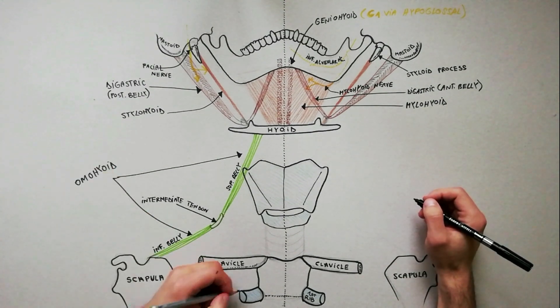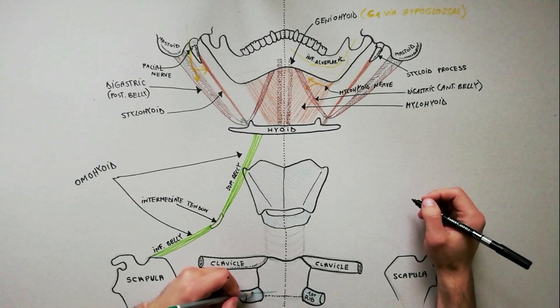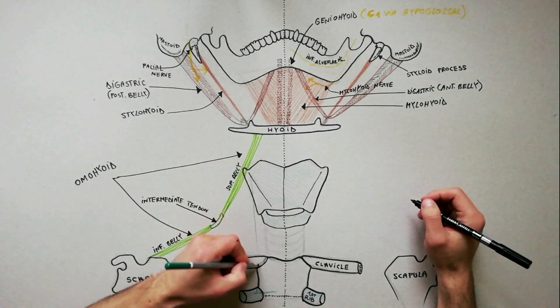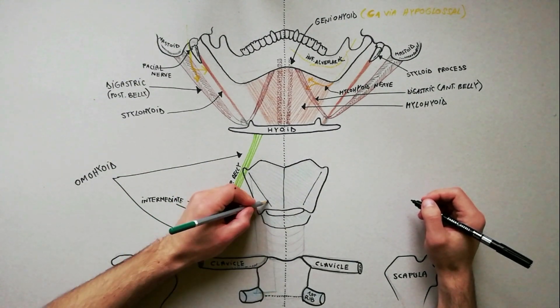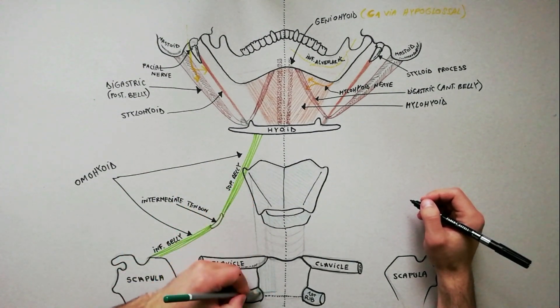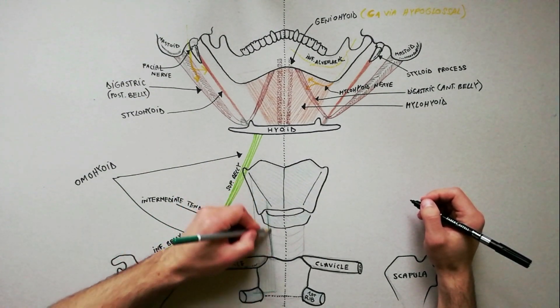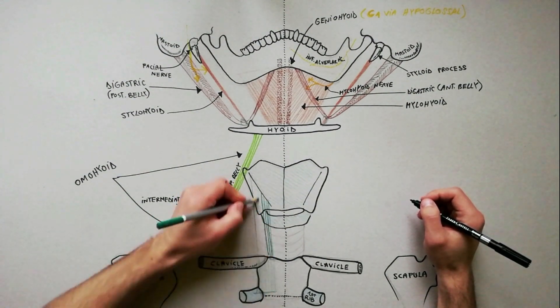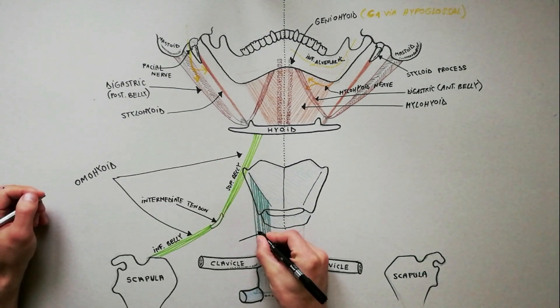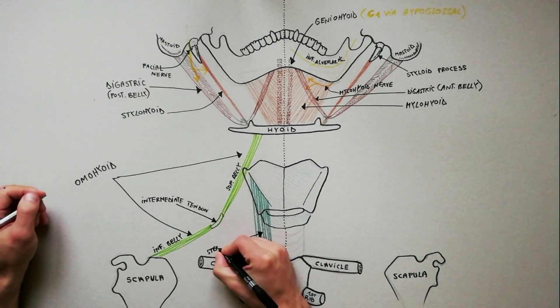The sternothyroid muscle originates from the posterior surface of the manubrium and the adjoining part of the first costal cartilage, to be inserted in the oblique line on the lamina of the thyroid cartilage.